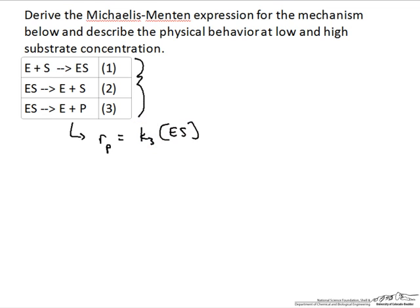The concentration of the enzyme-substrate complex is a difficult thing to actually measure during an experiment — this tends to be a short-lived species. So we want to develop relationships that allow us to solve for this concentration of the enzyme-substrate complex in terms of things that we can actually measure. To do that, we're going to use a technique called the steady-state approximation, and we'll assume that the concentrations of the different forms of the enzyme will be largely invariant — there's a steady level of the enzyme-substrate complex over time during the reaction.